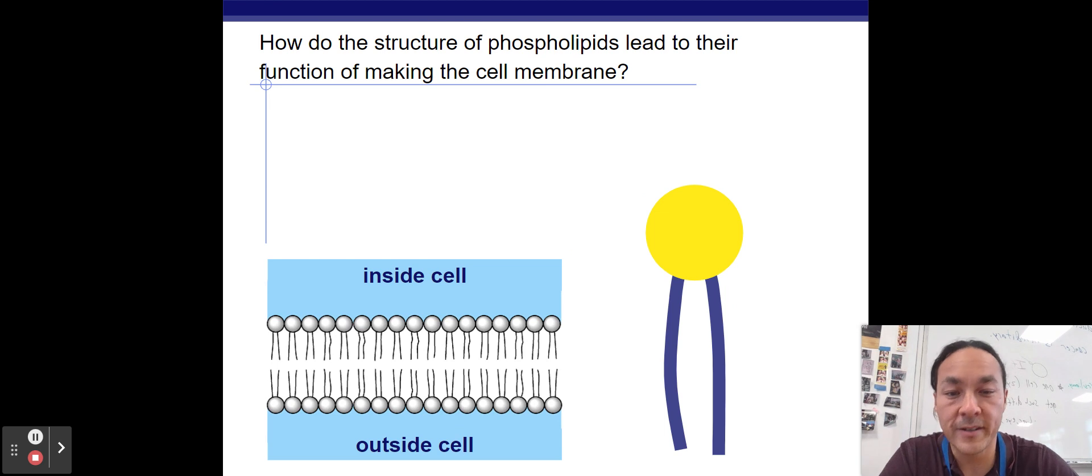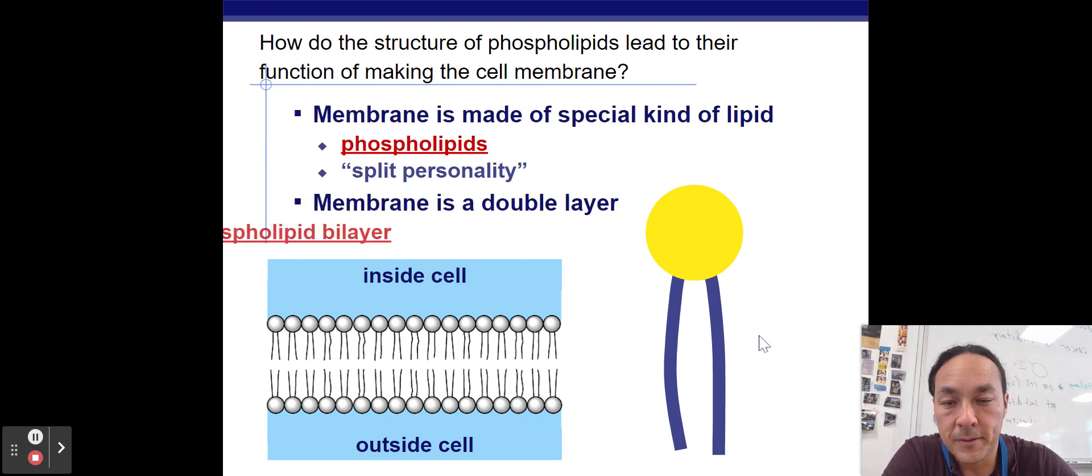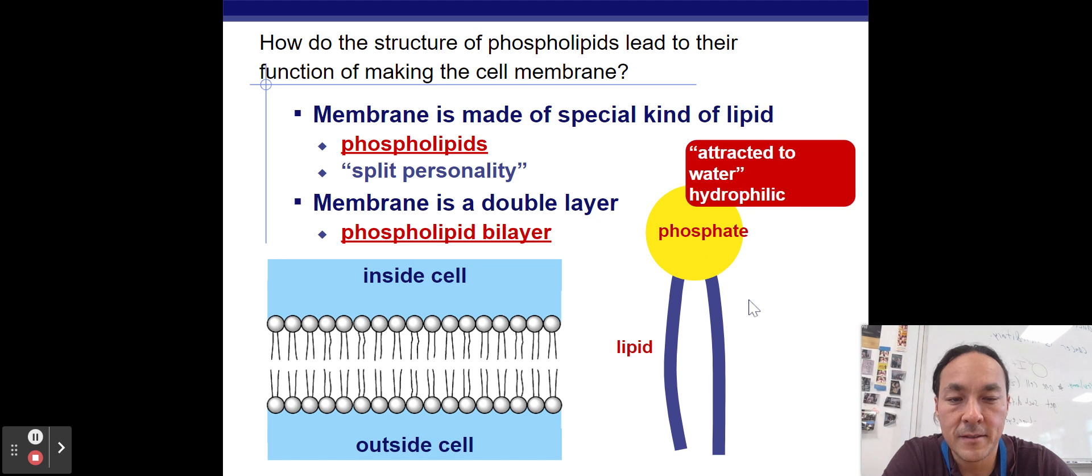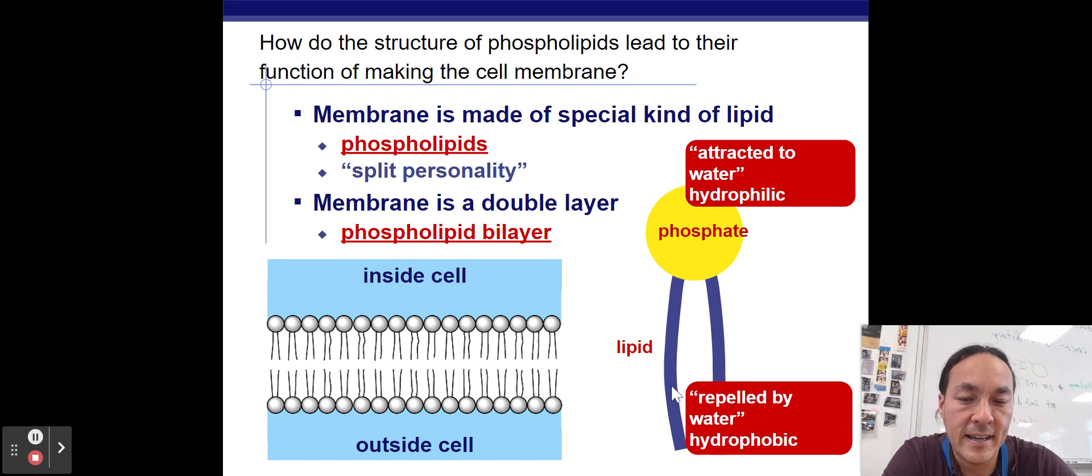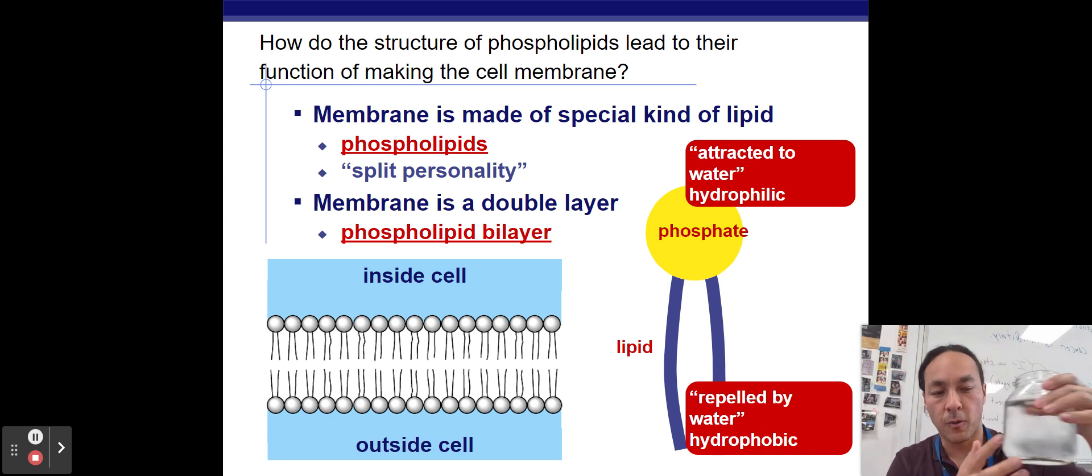So here's the first one, how the structure of phospholipids leads to their function of making a cell membrane. Well, if you remember from previous lessons, the phospholipids have a phosphate group attached to these fatty acid chains or tails. This group up here is water-loving. It is polar. It is hydrophilic. All those things mean that it interacts well with water. They will point towards water in the cell.